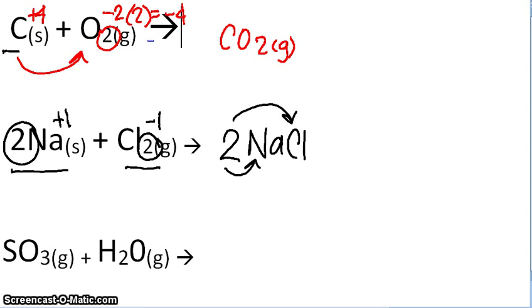So the third reaction is SO₃ plus H₂O. Now we know this is a combination reaction so they're going to add together. So it's going to look like this. We're going to go H₂SO₄. We're just going to combine them.